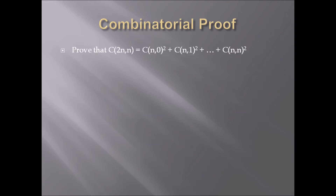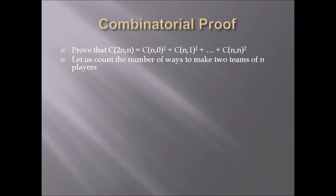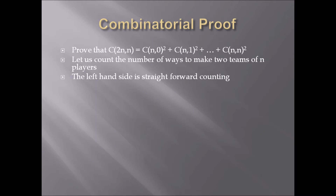One last combinatorial proof — in this one, we won't be counting bit strings. Prove that C(2n, n) equals C(n,0)² + C(n,1)² + ... + C(n,n)². I want to count the number of ways to make 2 teams of n players. The left-hand side is straightforward: you have 2n players and you want to choose n people for the first team, and the remaining n people go to the other team.